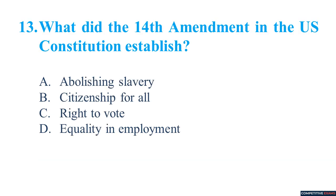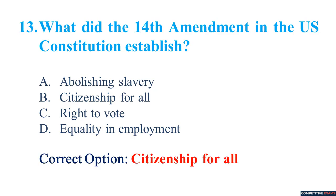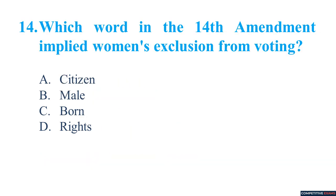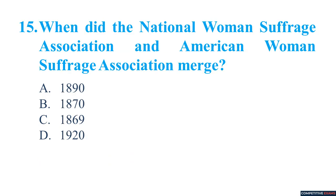What did the 14th Amendment to the US Constitution establish? Citizenship for all. Which word in the 14th Amendment implied women's exclusion from voting? Male. When did the National Women's Suffrage Association and American Women's Suffrage Association merge? 1890.